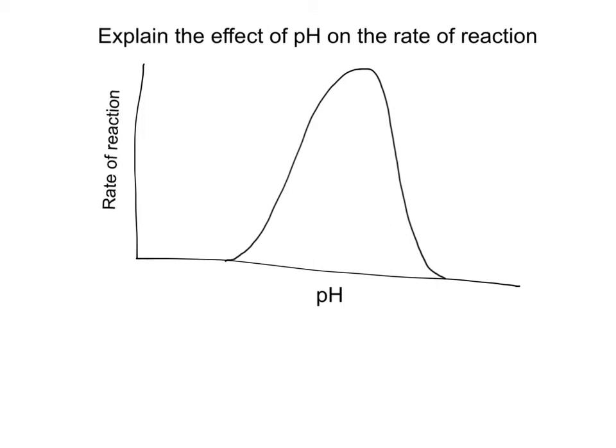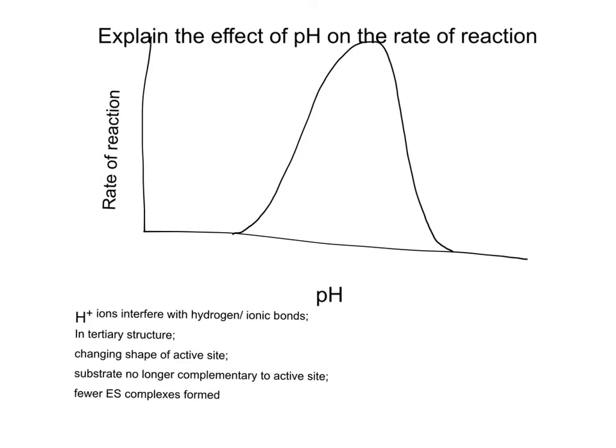To explain the effect of pH on the rate of reaction, you have to tell the examiner why the rate decreases as you move away from the optimum. You've got to explain in terms of enzyme-substrate complexes forming. If you change the pH, you change the concentration of hydrogen ions, and hydrogen ions will interfere with hydrogen and ionic bonds in the tertiary structure. This could change the shape of the active site, so it's no longer complementary to the substrate, so fewer enzyme-substrate complexes can be formed. These are the key mark points that you need to know.